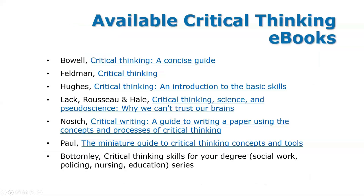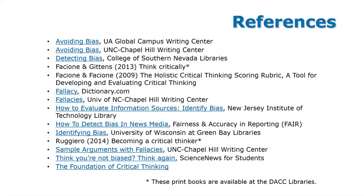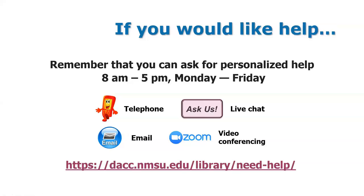As librarians, we can't help but tell you about what we have on our shelves and in our databases. We have e-books you can access electronically from anywhere with internet access and recommend them for learning more about critical thinking. These are also the references used in this presentation. Ones with an asterisk are actual printed books in our collection. We hope today's presentation was useful, and if you still need something, please let us know — we are here for you.